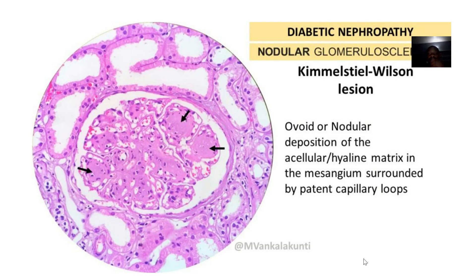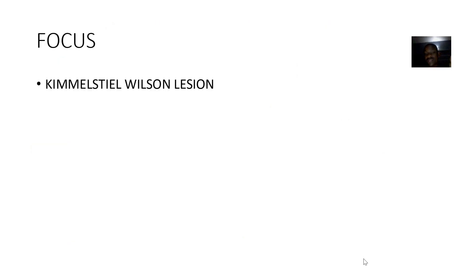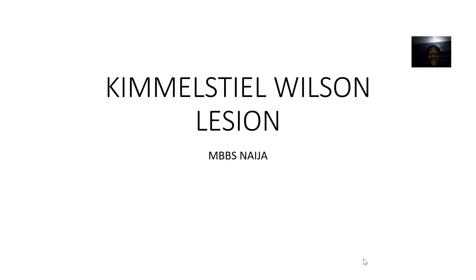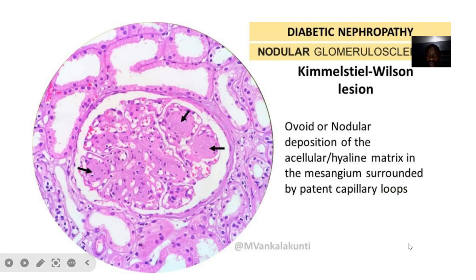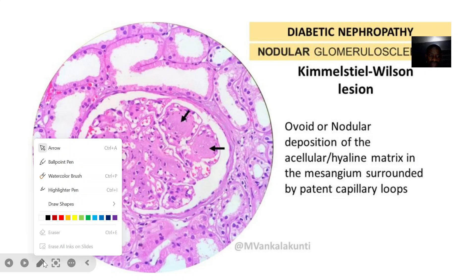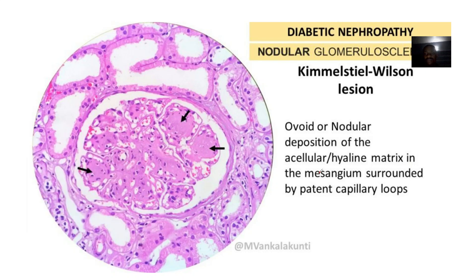We're looking at a type of lesion seen in diabetic nephropathy — this is known as the Kimmelstiel-Wilson lesion. It is described as an ovoid or nodular deposition of acellular or hyaline matrix in the mesangium. So there's a deposition of hyaline material in the mesangium, and that's what is called the Kimmelstiel-Wilson lesion.